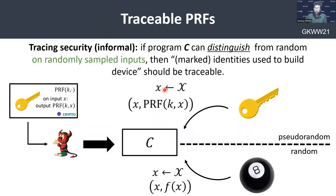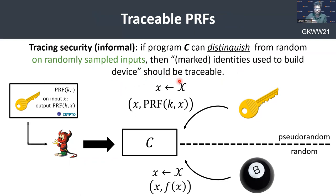The notion of traceable pseudorandom functions was introduced by Goyal et al. in a very recent work in 2021. Informally, it says that if there is a program C that can distinguish a pseudorandom function from a random function on randomly sampled inputs, then the marked identities used to build the pirate device should be traceable.